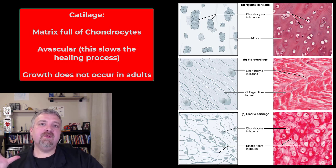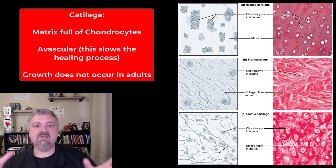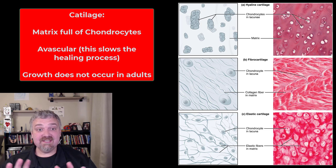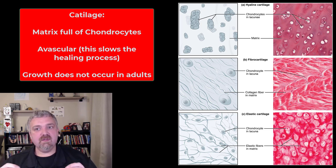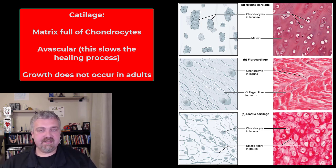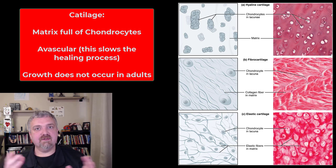Hey everybody, Dr. Rowe here. In this video we're going to cover the three types of cartilage. First, let's just talk about cartilage. Cartilage is a matrix that's full of chondrocytes. Chondrocytes are cartilage cells.